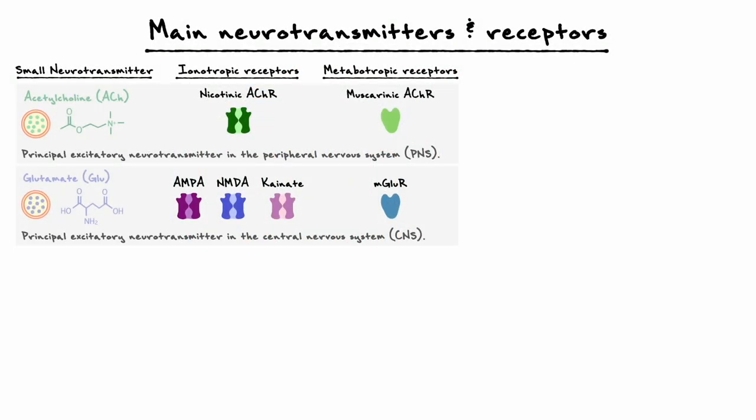With glutamate now covered, we can move on to the next neurotransmitter. If you recall from the start of this section, one huge difference between neurons in the central nervous system and neurons at the neuromuscular junction is that neurons in the CNS can have an excitatory or inhibitory output on the postsynaptic cell. Given that glutamate is the main excitatory neurotransmitter, we need to consider what is the main inhibitory neurotransmitter.